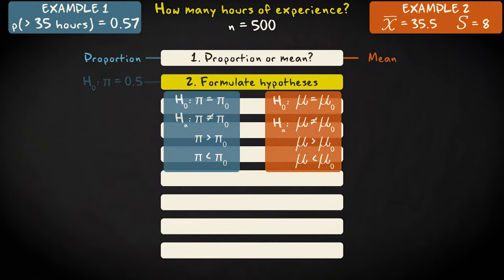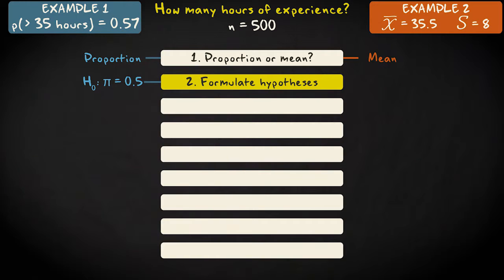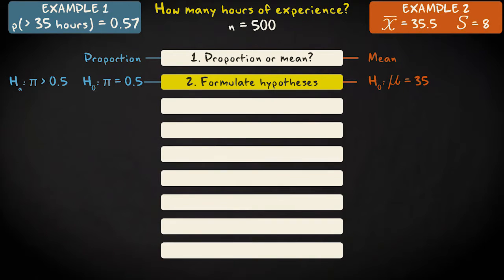Our null hypotheses are pi equals 0.5 and mu equals 35. The alternative hypotheses are pi is larger than 0.5 and mu is larger than 35. We thus have to conduct right-tailed tests.